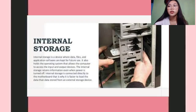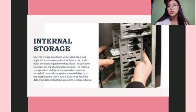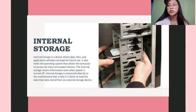Number 2 is Internal Storage. Internal Storage is a device where data, files, and application software are kept for future use. It also holds the operating system that allows the computer to access the input and output devices. The internal storage retains information even when power is turned off, and is connected directly to the motherboard, which is why it is faster to load data than data stored on an external storage device.